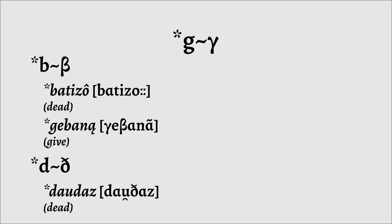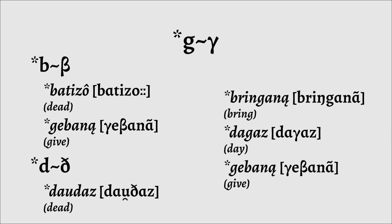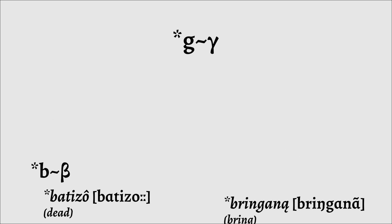Speaking about G, it is kind of the problem child of the voiced obstruents. See, in Proto-Germanic, the B and the D had very similar allophonic patterns to one another. They were stops word initially and after sonorants, but were fricatives everywhere else. The G, on the other hand, was only a stop after a nasal being a fricative everywhere else including word initially.